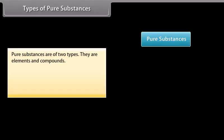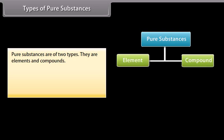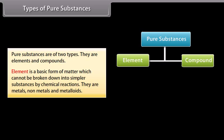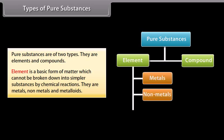Types of pure substances. Pure substances are of two types. They are elements and compounds. Element is a basic form of matter which cannot be broken down into simpler substances by chemical reactions. They are metals, non-metals, and metalloids.